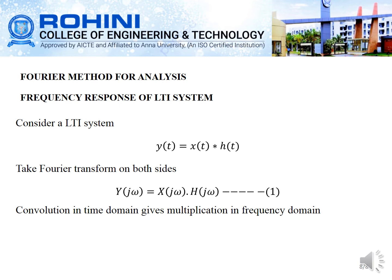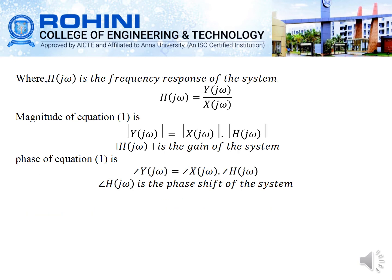Next is the Fourier method for analysis and the frequency response of an LTI system. For an LTI system, y(t) equals x(t) convolved with h(t). Taking the Fourier transform on both sides, this becomes Y(j omega) equal to X(j omega) times H(j omega), since convolution in the time domain gives multiplication in the frequency domain. H(j omega) is the frequency response, so H(j omega) equals Y(j omega) divided by X(j omega).